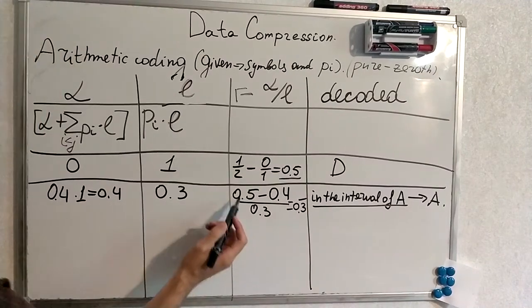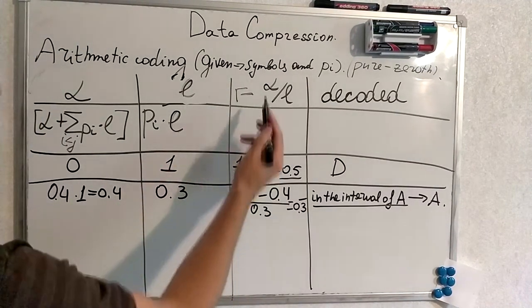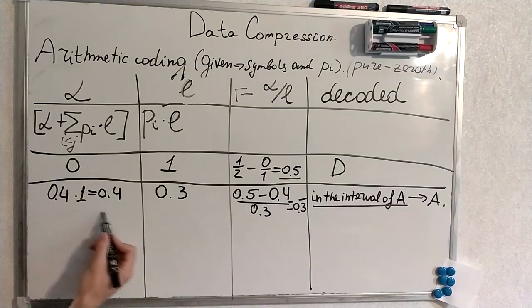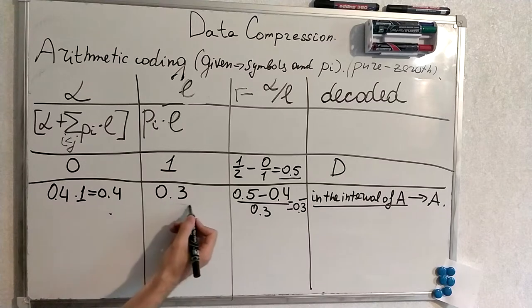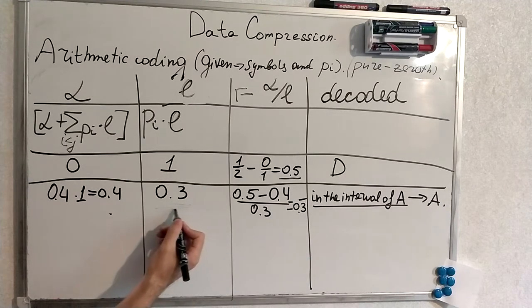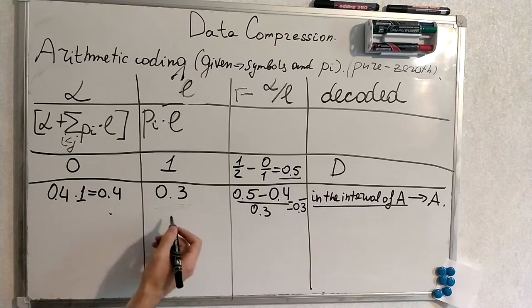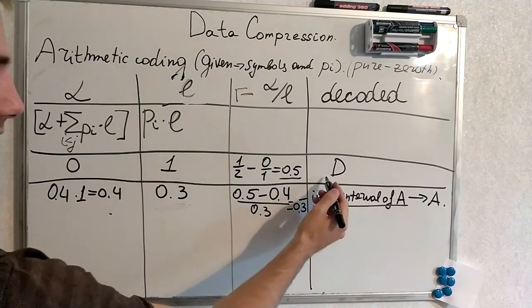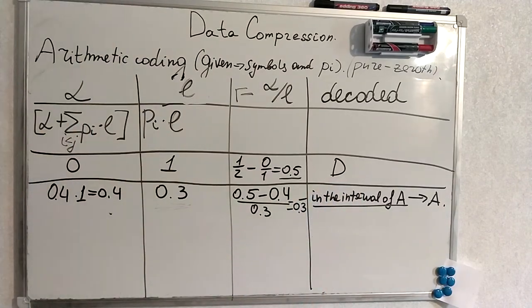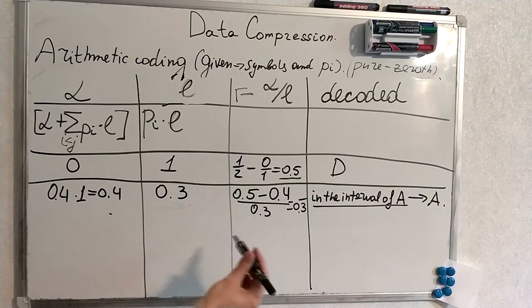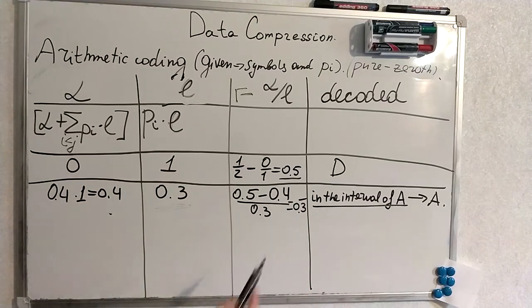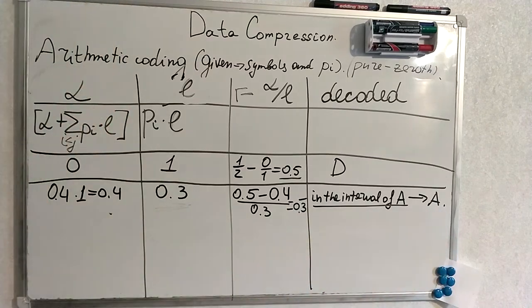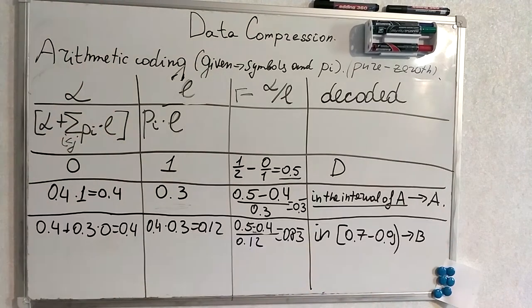Now the next step. R does not change throughout the whole algorithm. Alpha and L change. We calculate new alpha according to the formula. We calculate new L. 0.3 because we multiplied 1 by the length of D by the probability of D. This is 0.3. When we recalculate this, 0.3 in period, it's inside the interval of A. Thus we decode A.